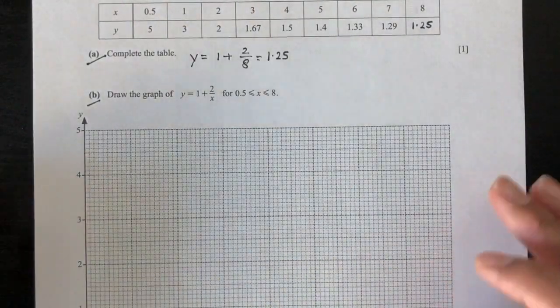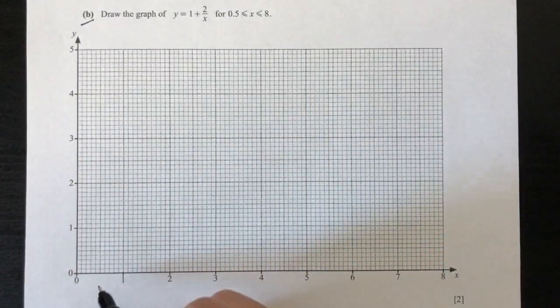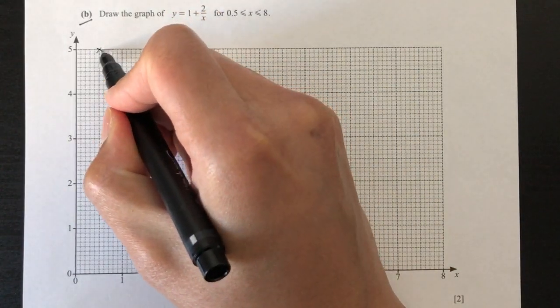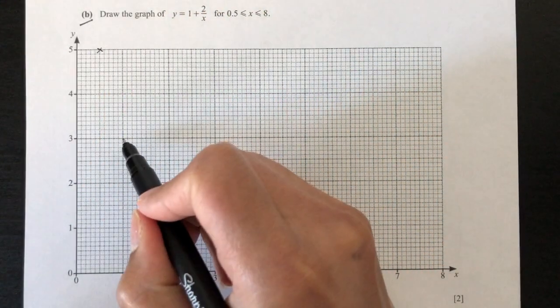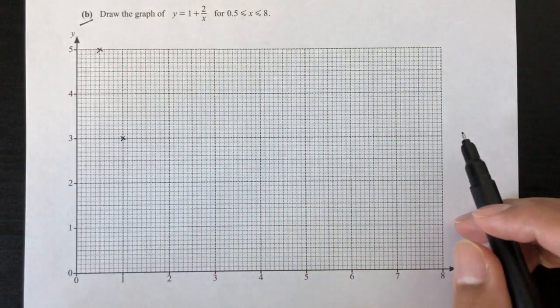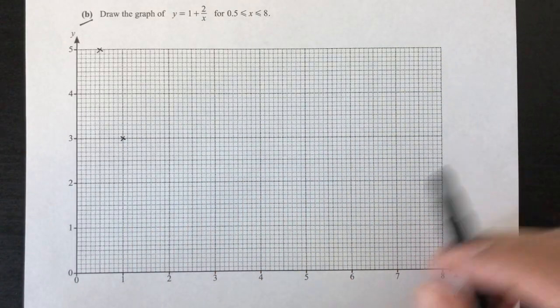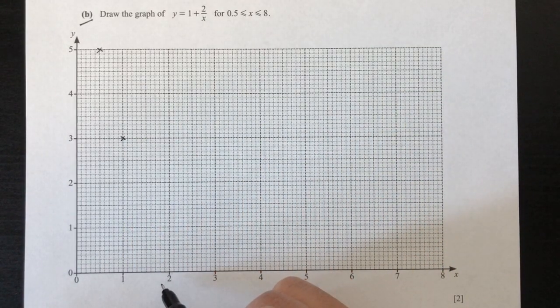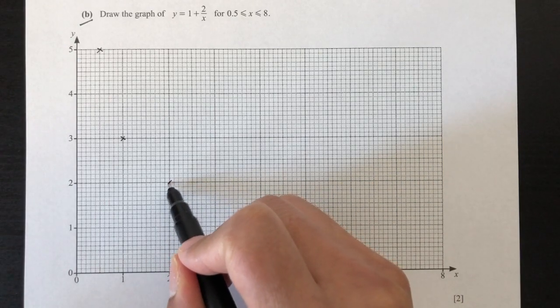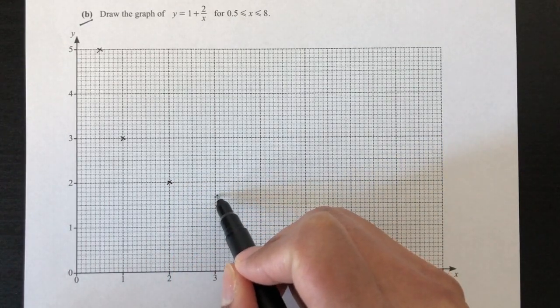So the first point we have is (0.5, 5). So 0.5, 5 will be right here. Then we have (1, 3). This one. Then we have (2, 1.67). 1.67 will be about here. Then we have (4, 1.5).